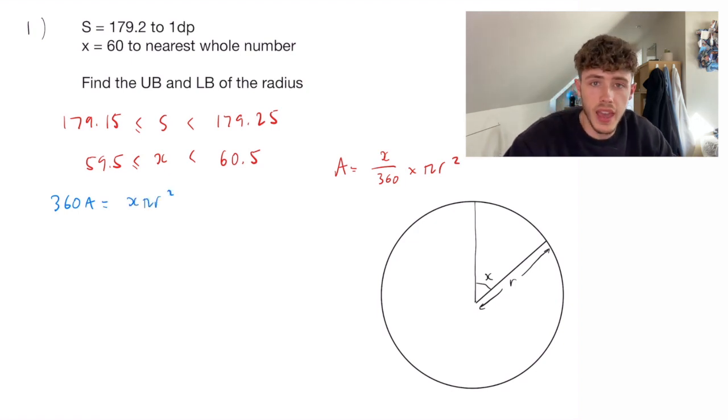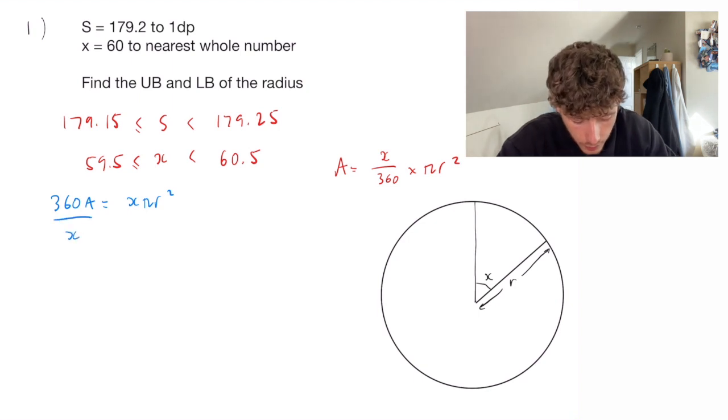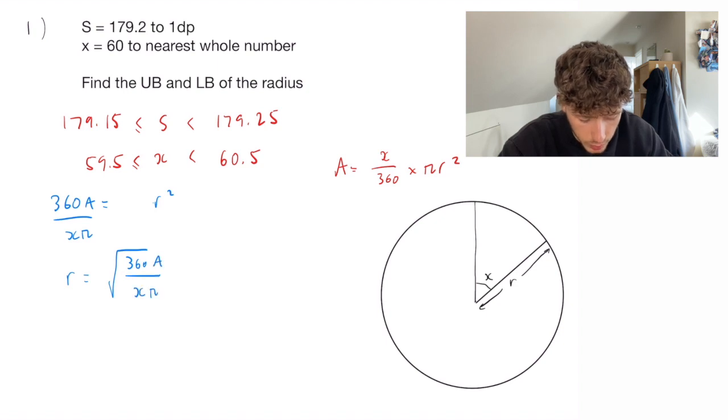If we divide by the x and the pi, then we're just left with the r squared. And then to get rid of the squared, we square root. So r is equal to the square root of 360a over x times pi.